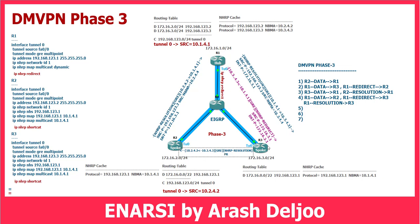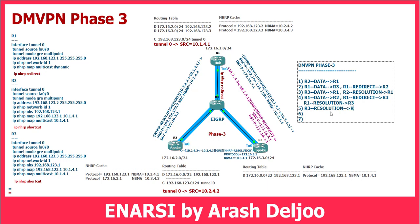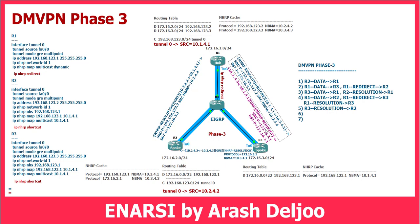Inside this NHRP resolution reply, the protocol address (logical address) is 172.16.3.1 and the physical address (NBMA address) is 10.3.4.3. Because of that, in Router 2, after receiving this information, we have protocol address 172.16.3.1 and NBMA 10.3.4.3. This is the first step answering the resolution request from Router 2. We can add that R3 is now using the resolution reply message and sending it to Router 2. Also, because Router 3 received the redirect message, Router 3 itself should now request NHRP resolution about 172.16.2.1.